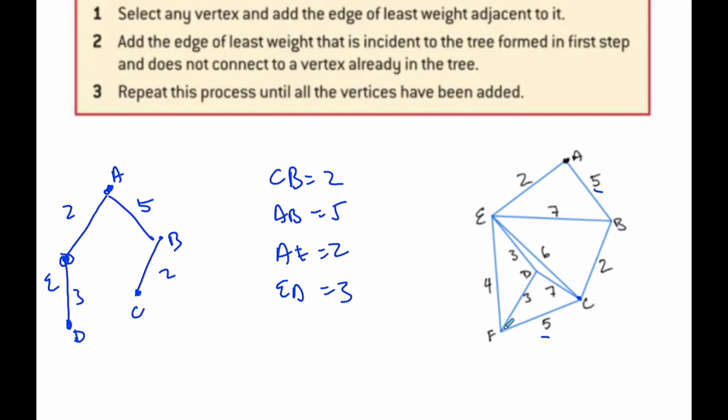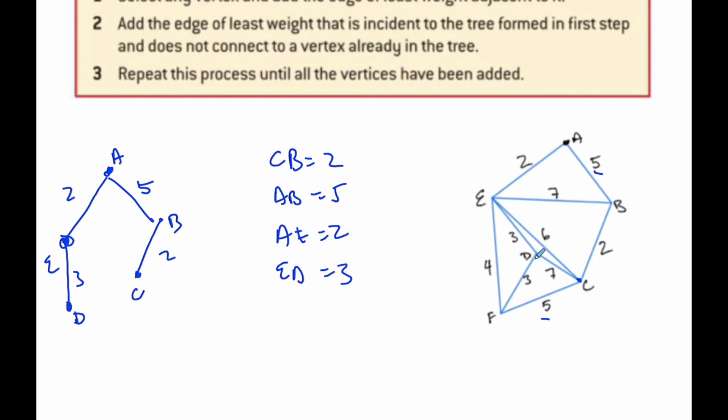And then finally, I need to get F, and I'm looking from all these outstanding variables that are available, which one is the closest, the shortest one? Well, that's going to be from D to F, which is 3. And if I add these up, you can see that it is equal to 15. So 150,000 euros to lay the village. And this is the minimum spanning tree.